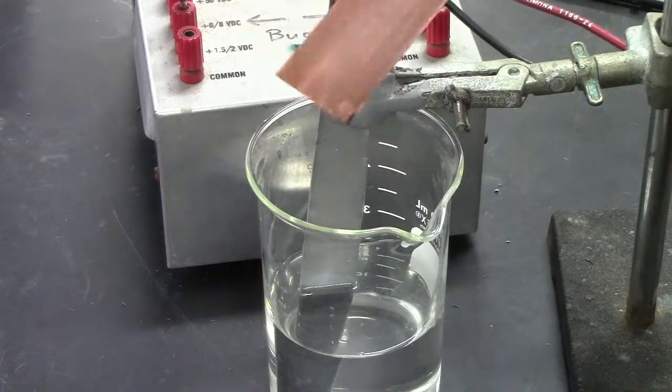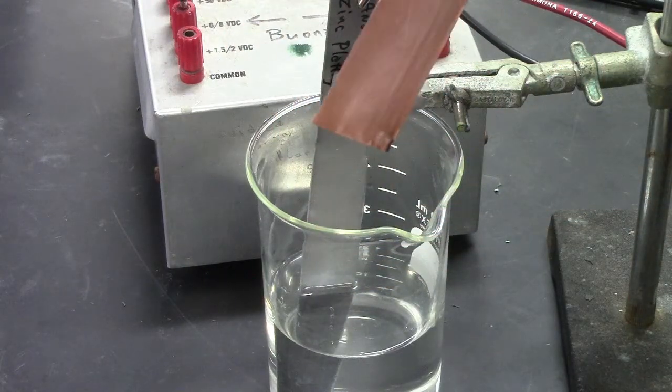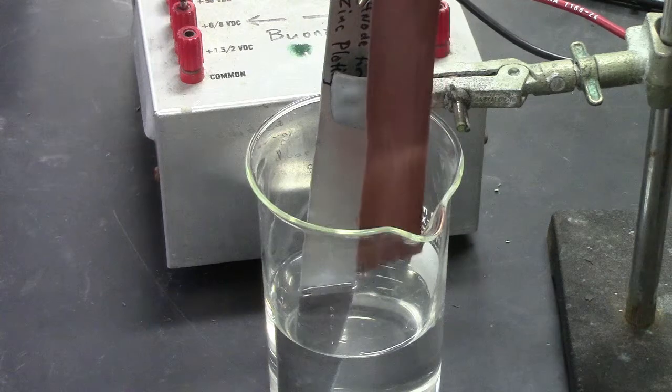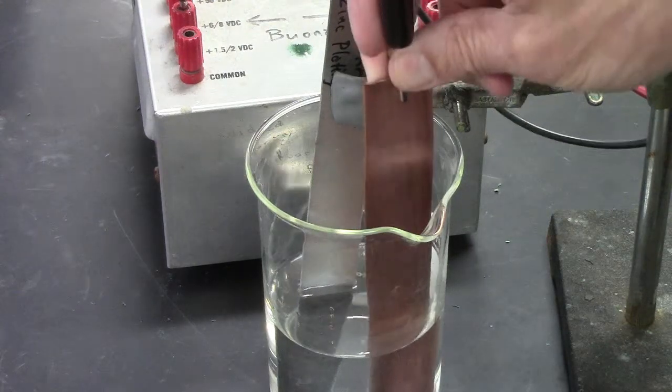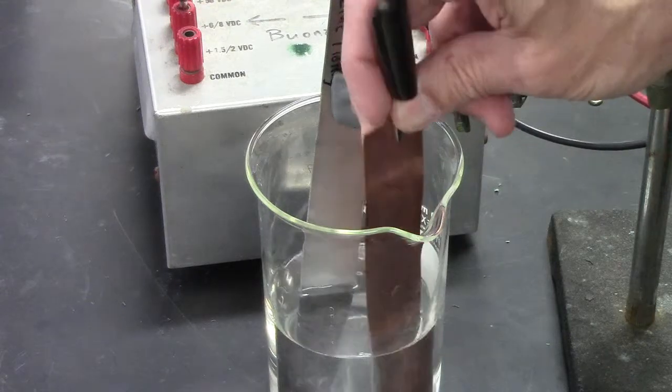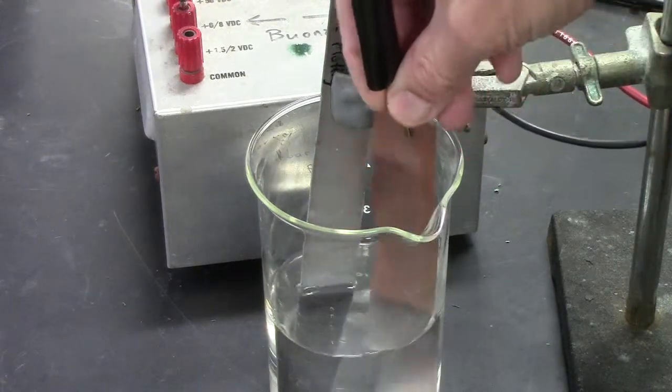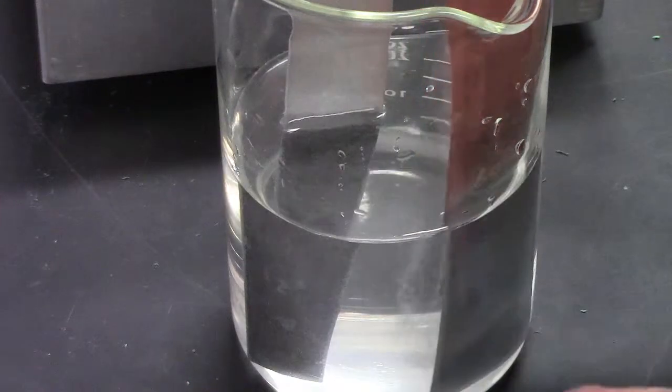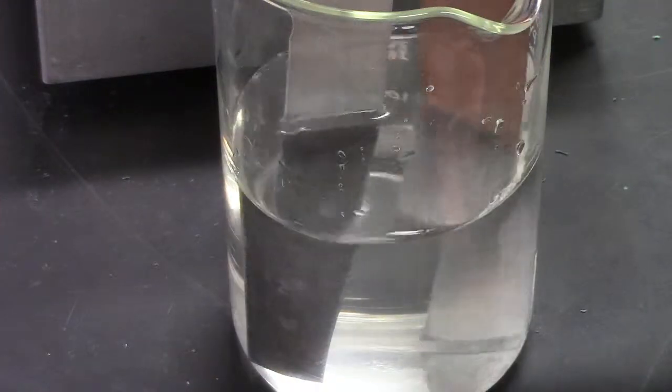Voltage is on. So current will flow when I immerse this. And there are some bubbles forming here, and the copper will begin changing color.